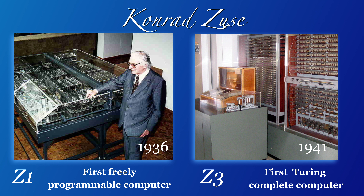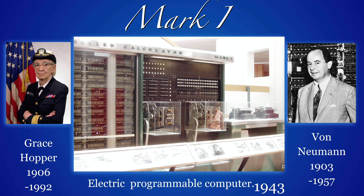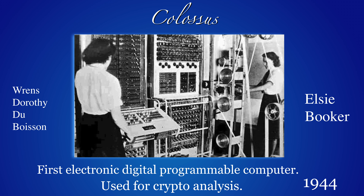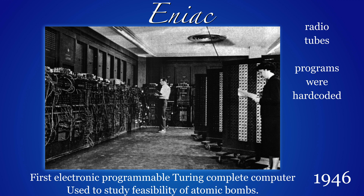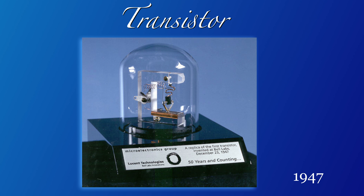In Germany during the war, Konrad Zuse built several computers: Z1 was the first freely programmable computer and Z3 the first Turing-complete computer. In the US, the first electric programmable computer was Mark I, now in the basement of the Science Center. Grace Hopper was one of the first computer programmers on Mark I and also the first female rear admiral in the US — Amazing Grace. Colossus was the first electronic digital programmable computer, and the first electronic programmable Turing-complete computer was used for building atom bombs.